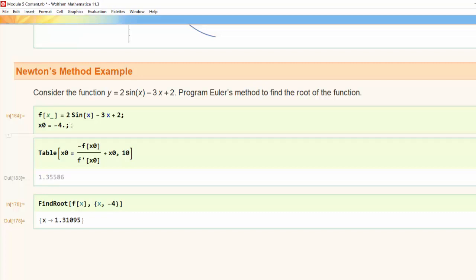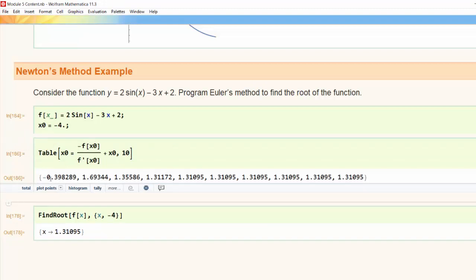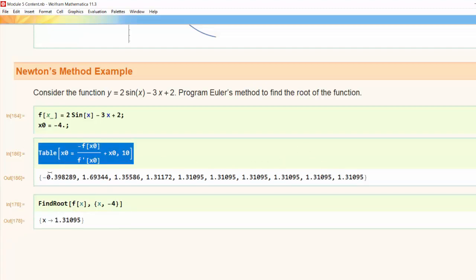So once again I'll reevaluate my initialization cell and now I'll run my table cell and sure enough now I get all those values. I can see my x₁, x₂, x₃, x₄, x₅ and basically anything higher than x₅ is returning that same value for the root. So this is one way that I can run the code.